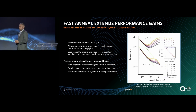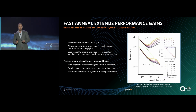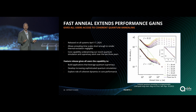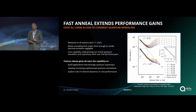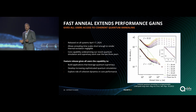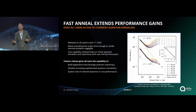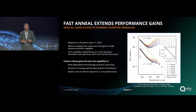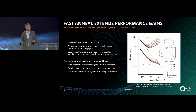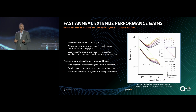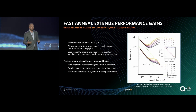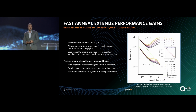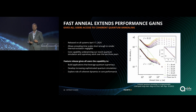A couple of months ago, we released a protocol called fast anneal, made available for general access on all of our QPU solvers on April 17th — exactly two months ago today. This really allows users to specify annealing protocols on timescales short enough to render thermal excitation negligible. In a sense, the QPU is effectively able to outrun the thermal environment. This is a core capability we've had internally for nearly two years that has underpinned all of our work around coherent quantum simulation, coherent quantum annealing, and our computational supremacy result.